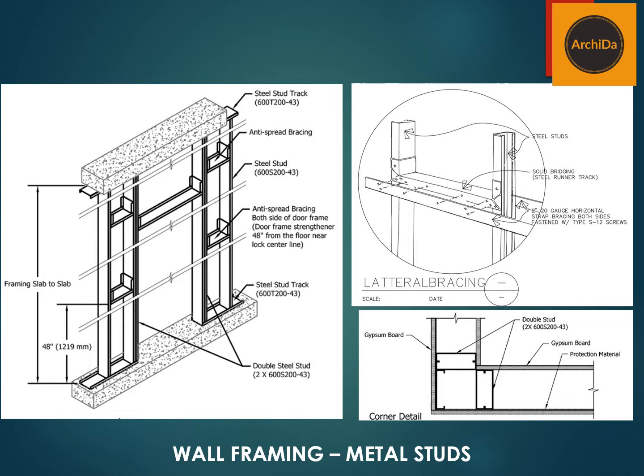The picture on the upper right, titled lateral bracing, is actually the horizontal studding — sometimes they call it lateral bracing. The picture on the lower right is a floor plan of the wall. If you notice, it is a corner detail wherein it is double studded also, to provide rigidity and stability of the wall itself.